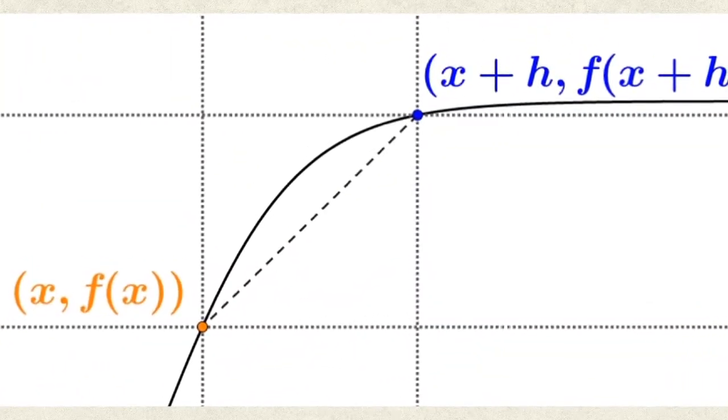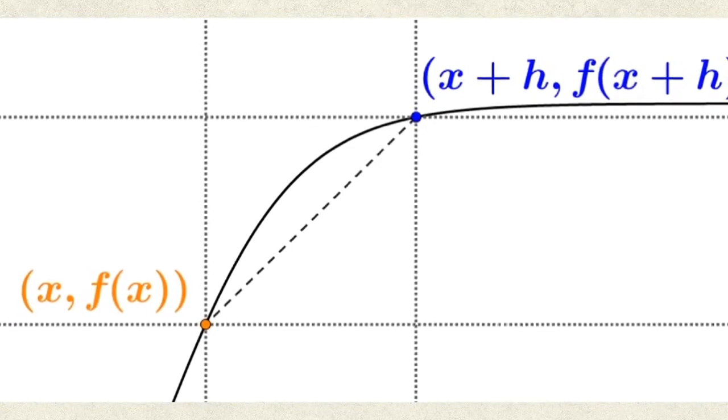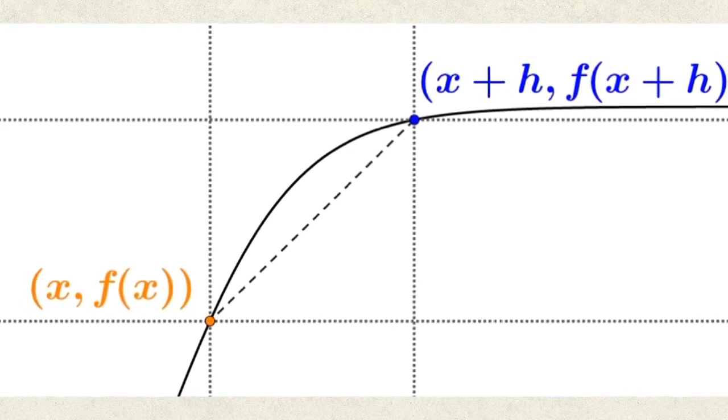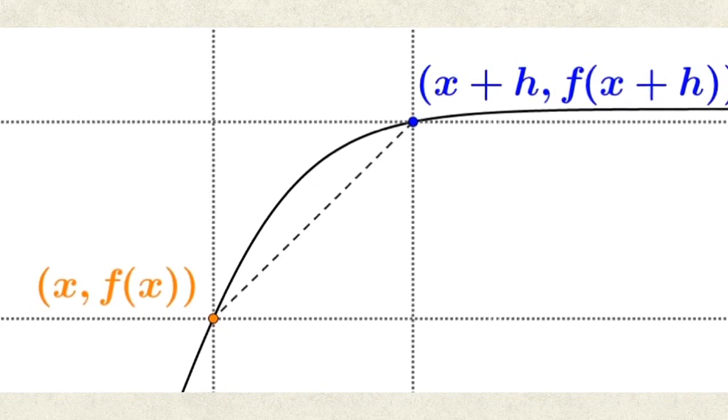The difference quotient is derived from the notion of looking at any two points on the function's graph, the first point (x, f(x)) and the second point slightly to the right (x+h, f(x+h)).